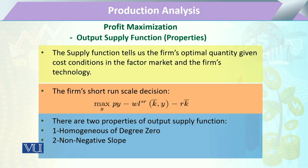Under the optimization we are going to explain the properties of the output supply function. A firm is ready to supply any output in the market depending upon the output price and the input prices. Graphically, the intersection of the average variable cost and the marginal cost curve decides how much a firm will produce, and from that point the firm will start its supply.